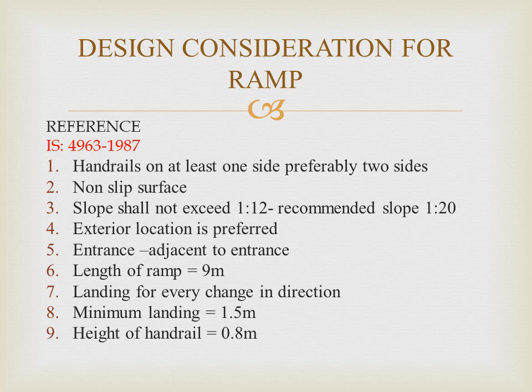Moving on to the design considerations for ramp. The code of reference is IS-4963-1987. The considerations are: handrails should be provided on at least one side, preferably on two sides. The surface should be non-slip. The slope shall not exceed 1:12, and the recommended slope is 1:20. Exterior location is preferred for ramps. The ramp should be provided adjacent to the entrance. The length of the ramp should always be 9 meters. There should be a landing for every direction change, with a minimum landing width of 1.5 meters, and the minimum height of the handrail should be 0.8 meters.